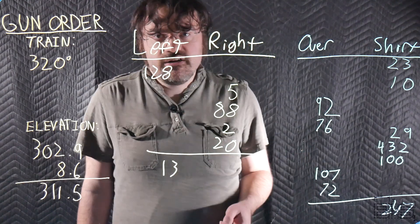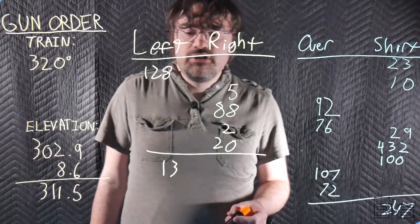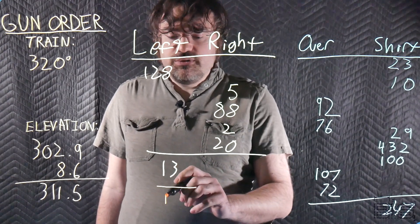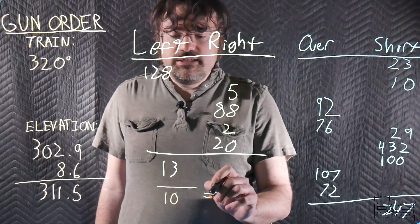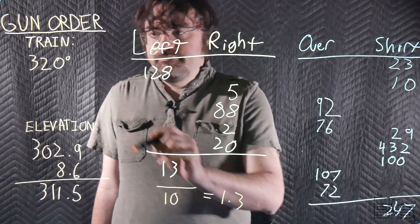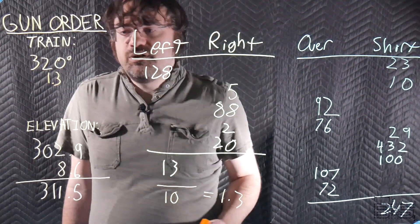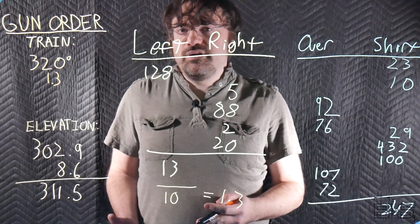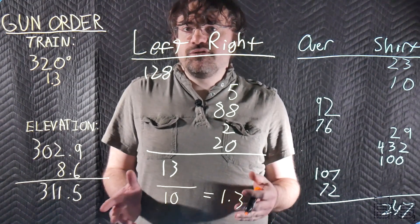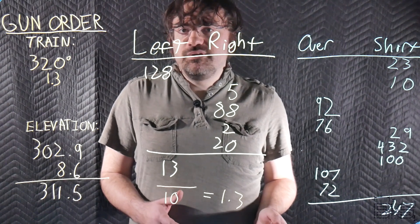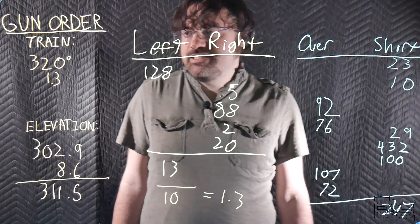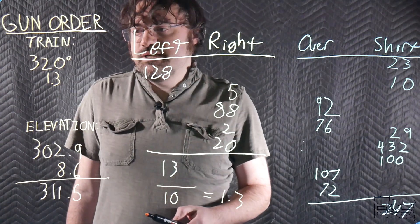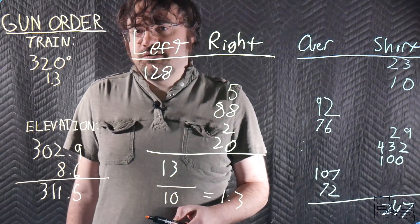So let's convert our 13 yards left error to mills. We do that by dividing it by however many thousands are in the range. So 13 divided by 10 is 1.3. You can think of it as deflecting our sights to the left by 1.3 mills. So our guns will have to point to the right by 1.3 mills. Now obviously we can't see the target so we compute our gun train order by taking 320 degrees and adding 1.3 mills.